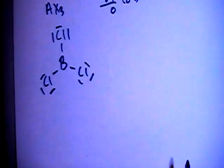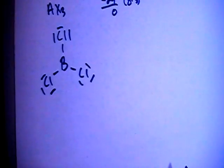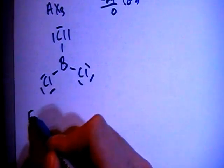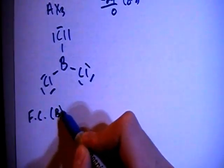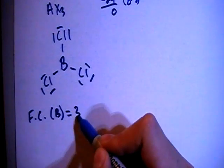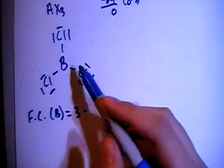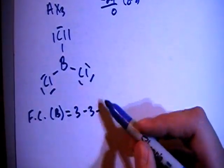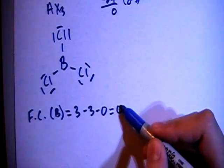Let's go ahead and check the formal charges to make sure that this is correct. So the formal charge on boron is going to be 3 valence brought in, minus 1, 2, 3 bonds, minus 0 non-bonding for a total formal charge of 0.